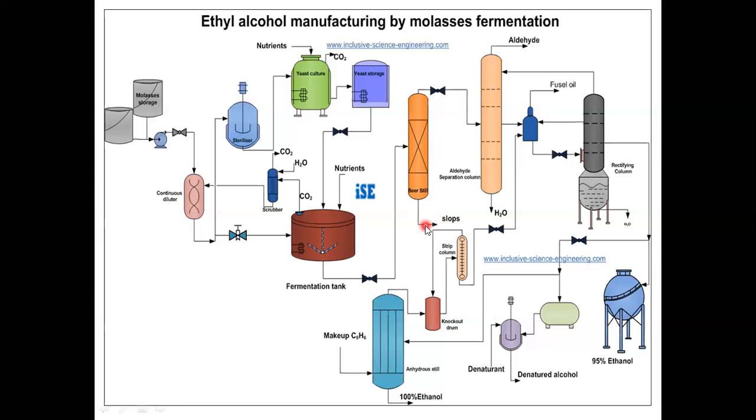It is the main bottom product of this beer still. The slope is concentrated by the evaporation for the cattle feed or the discharge as a waste. Slope contains proteins, sugar and vitamins. So from this beer still, it is sent to this aldehyde tank.